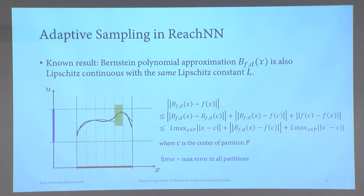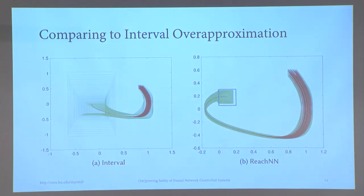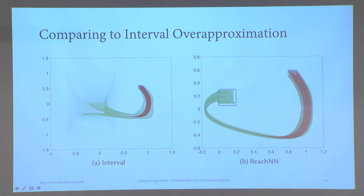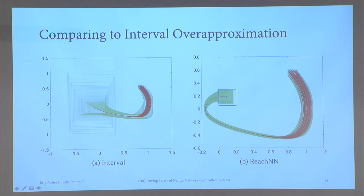Comparing with the interval over-approximation: on the left, the reachable set explodes, while on the right — using the same NNCS with our approach — the green flow pipes are much tighter. We can obtain a positive answer to the reachability question because the green box at the target time is completely contained in the blue box, which is the target set. So we have a formal proof that this NNCS will reach the target set.